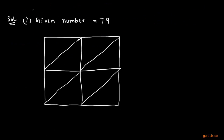Let us start with part one, where we are given the number 79. We count the digits and see that there are two digits, so we shall draw a square and make four equal parts of this square. Now we shall write the number 79 along the top and right side of the square like this.